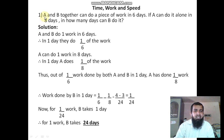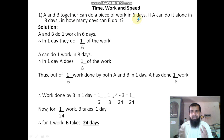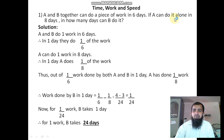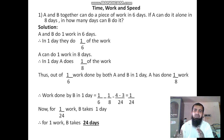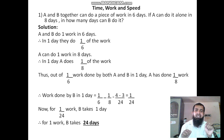The question is: A and B together can do a piece of work in 6 days. If A alone can do it in 8 days, in how many days can B do it? So how many days does B take to do the same work?